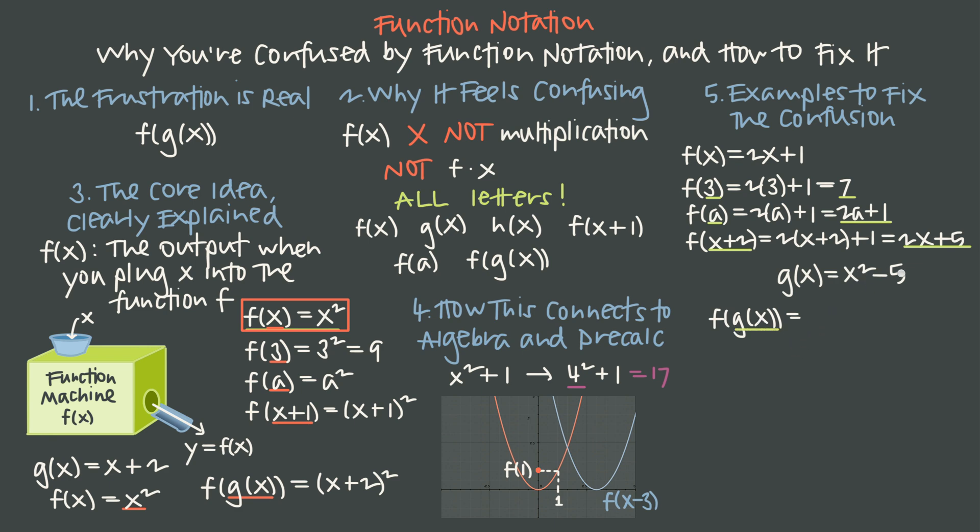So we take x squared minus 5 as our input, and we put it in to f. In other words, we're taking this value, we're going to double it, and then add 1. That means we take x squared minus 5, we double it, and then we add 1. We could leave the composition that way, or we could write this as 2x squared minus 10 plus 1, or 2x squared minus 9.